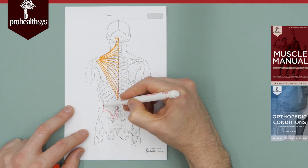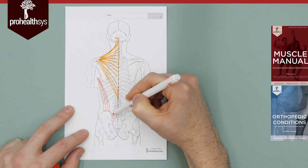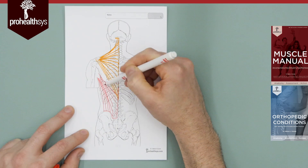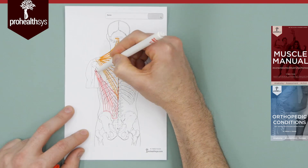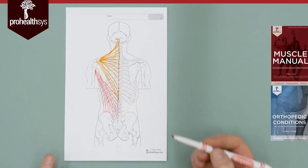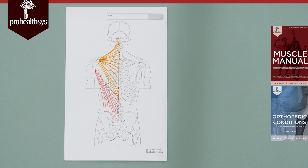The latissimus can attach to the inferior angle of the scapula — though that varies — and its main insertion is the medial lip of the bicipital groove. The actions of latissimus dorsi are adduction, extension, and medial rotation of the glenohumeral joint. Adduction is by far the main action, extension is another main action, and internal rotation is a weaker action.